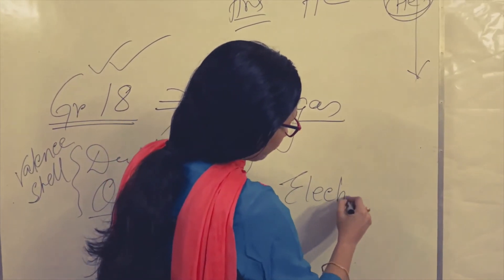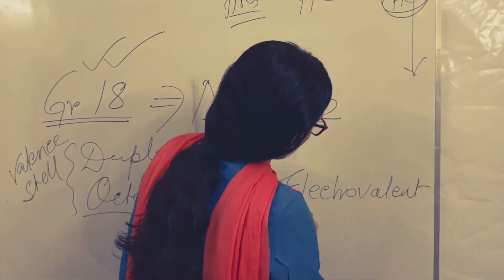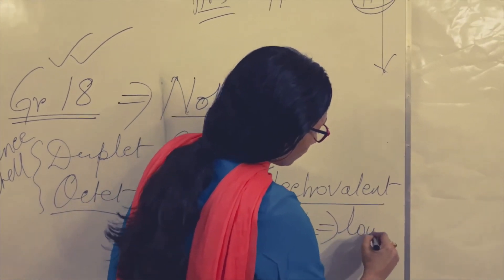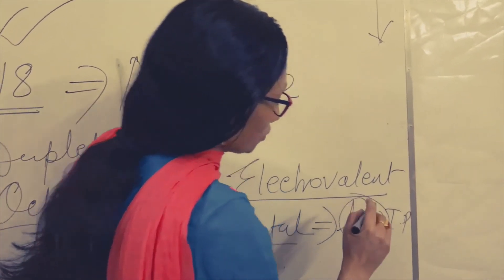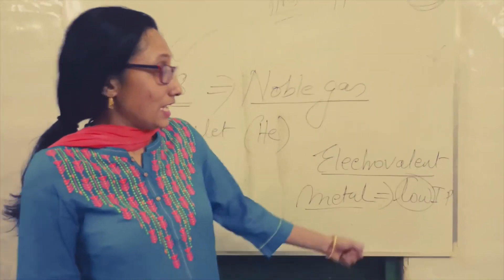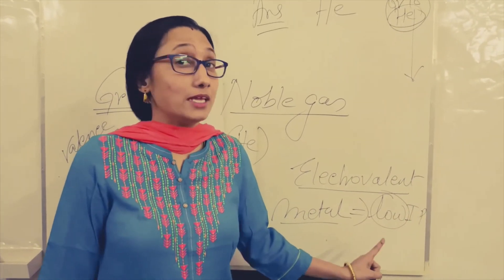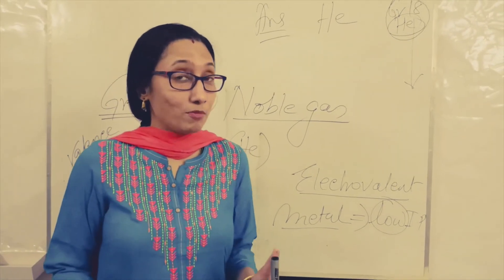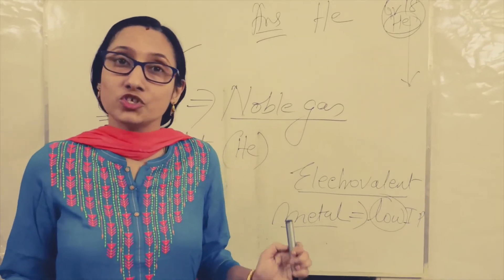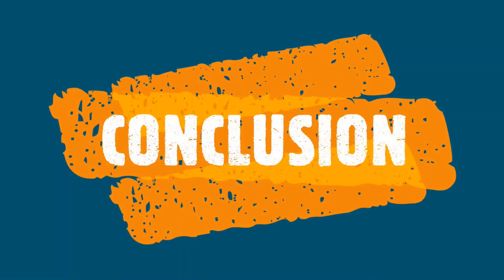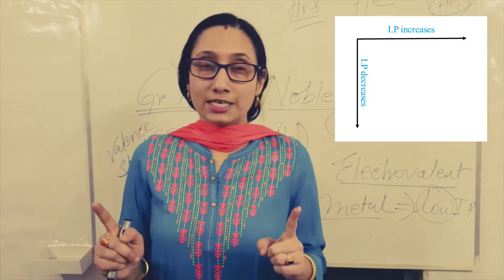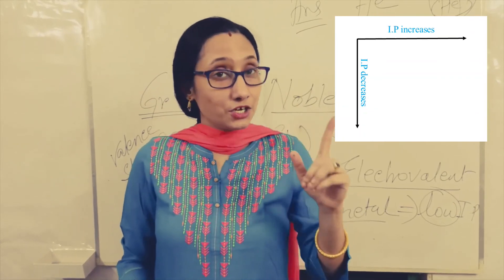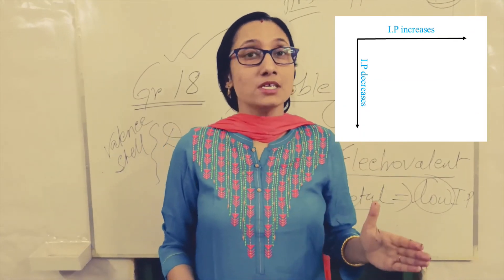For the formation of an electrovalent bond, the metal should have low ionization potential. If IP is low, a cation will be formed easily, and the formation of a cation is the first step in forming an electrovalent bond. So ionization potential increases from left to right across a period and decreases from top to bottom down a group.